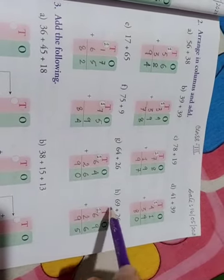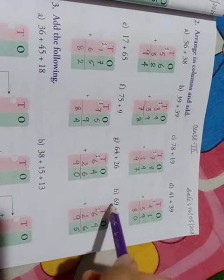Now 69 plus 26. 9 plus 6 is 15, write 5 and 1 is carried over. 1 plus 6 is 7, 7 plus 2 is 9.